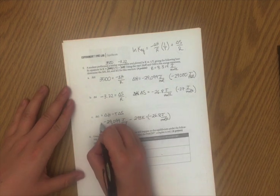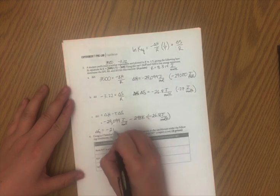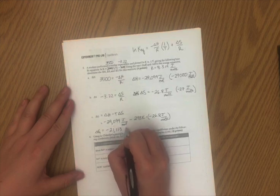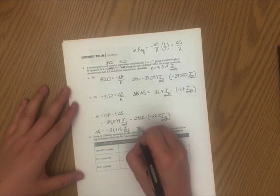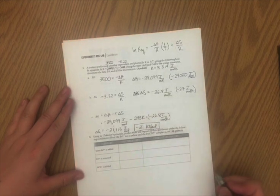And I'm going to end up with my ΔG equal to negative 21,113 joules per mole. To report this, we would probably say negative 21 kilojoules per mole. And that's our final answer.